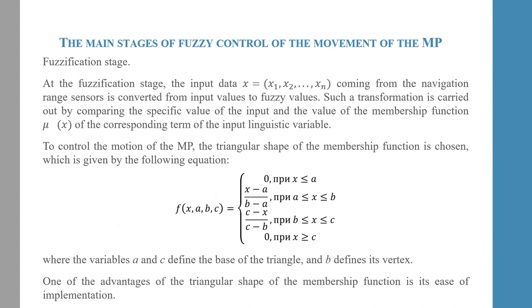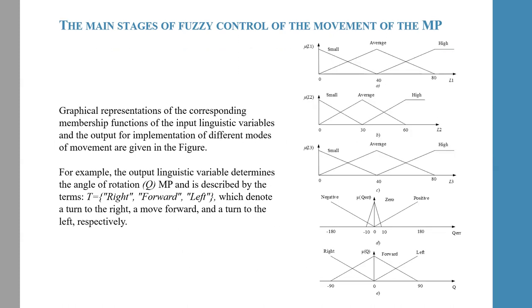To control the motion of the Mobile Platform, the triangular shape of membership function is chosen. One of the advantages of the triangular shape of membership function is its easy implementation. The graphical representation of corresponding membership functions of the input linguistic variables and the output for different modes of movement are shown in the figure.